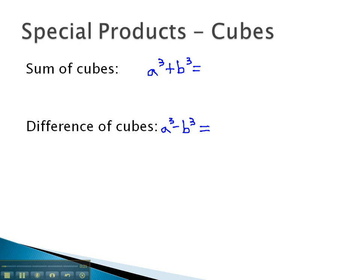Both are very similar in how they factor. We'll first identify the cube roots of both, in this case, a and b. Using those cube roots, we'll fill in a binomial factor, plugging those roots a and b into that binomial factor.